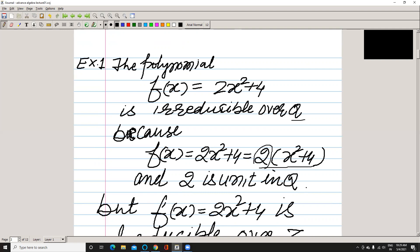According to this definition, 2 is a unit because 2 has inverse 1/2. So if this is your g(x) and this is your h(x), this is a unit in Q, that is why it is irreducible over Q.